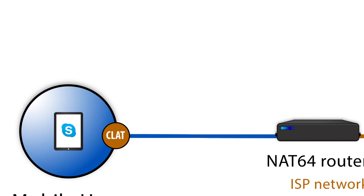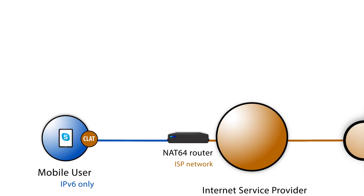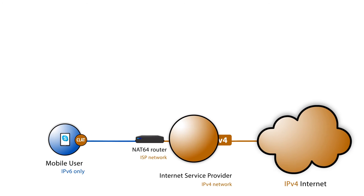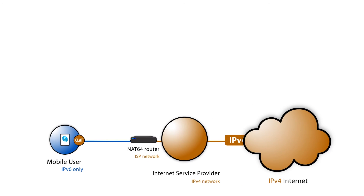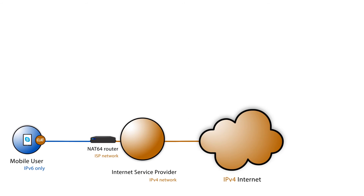The packets are then sent over an IPv6-only network to a NAT64 translator, which translates them back into IPv4 and sends the packets to an IPv4-only server — in our example, the Skype server.